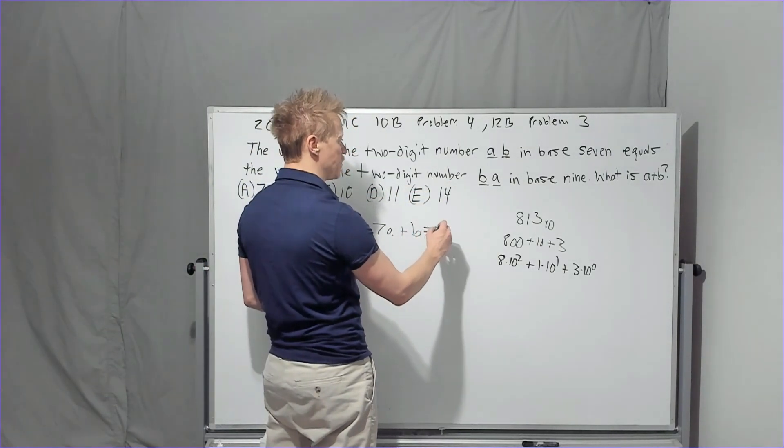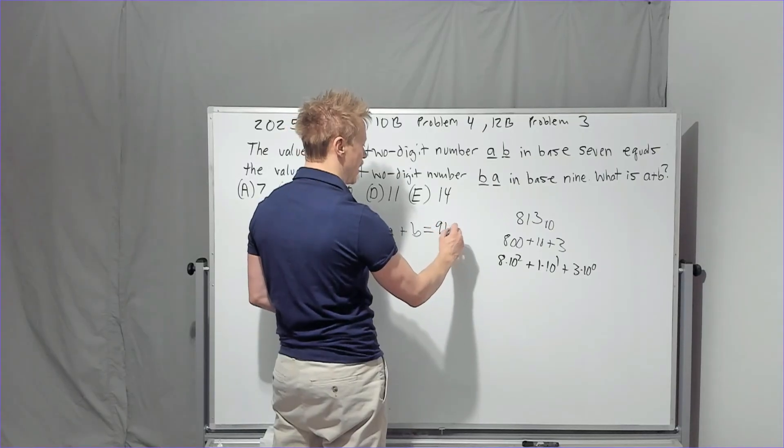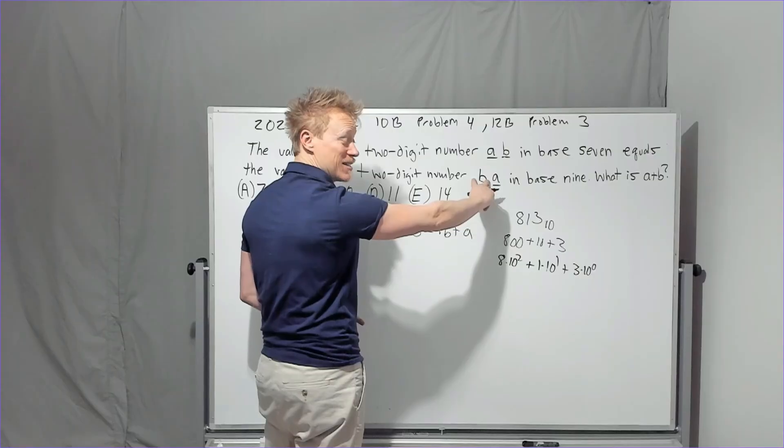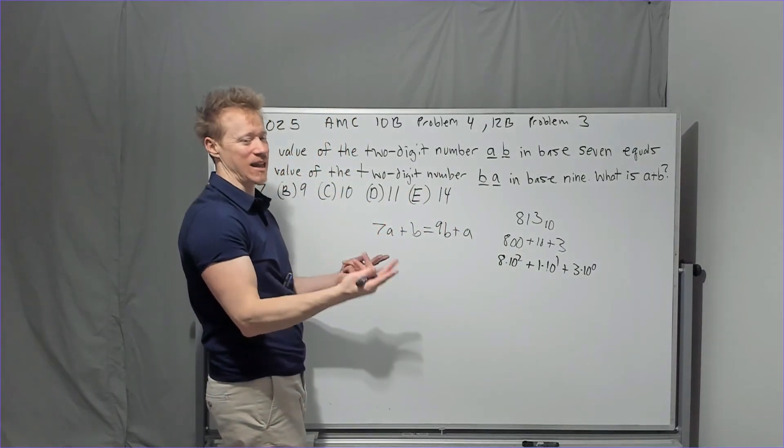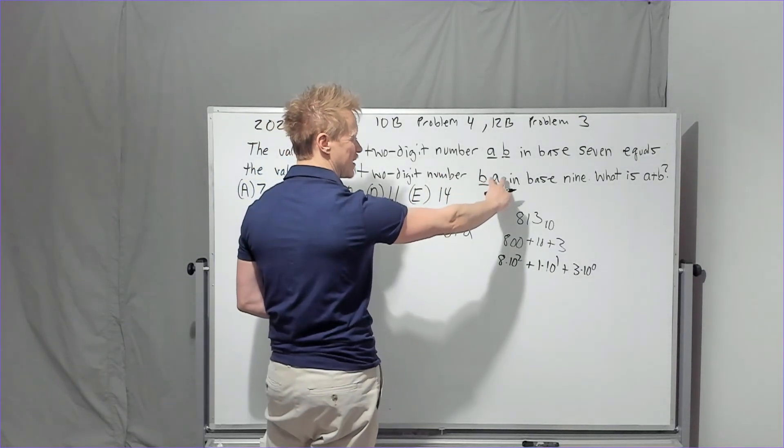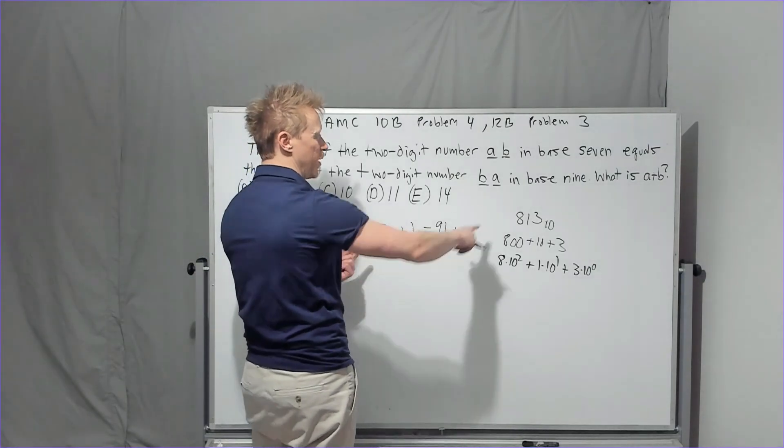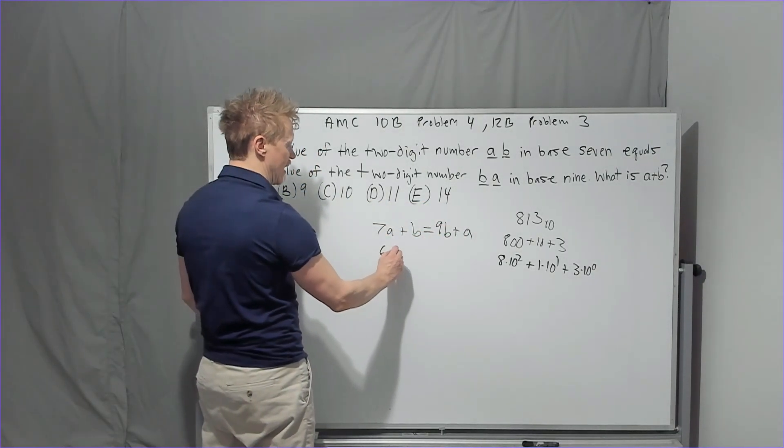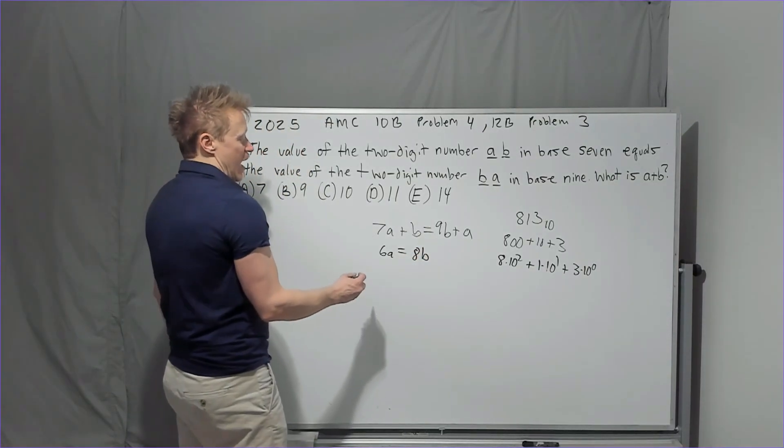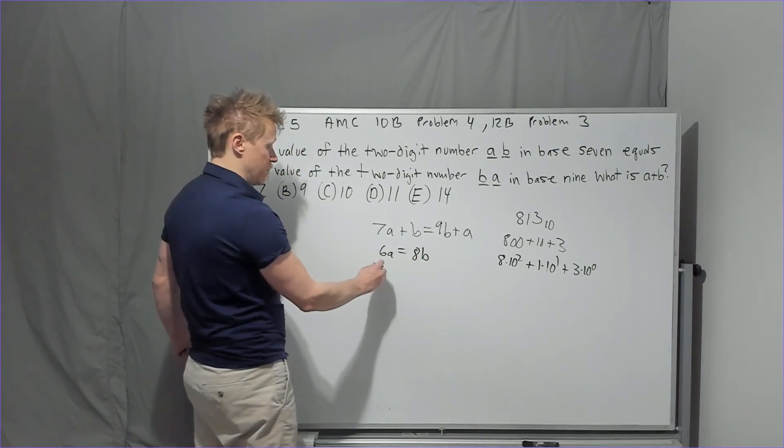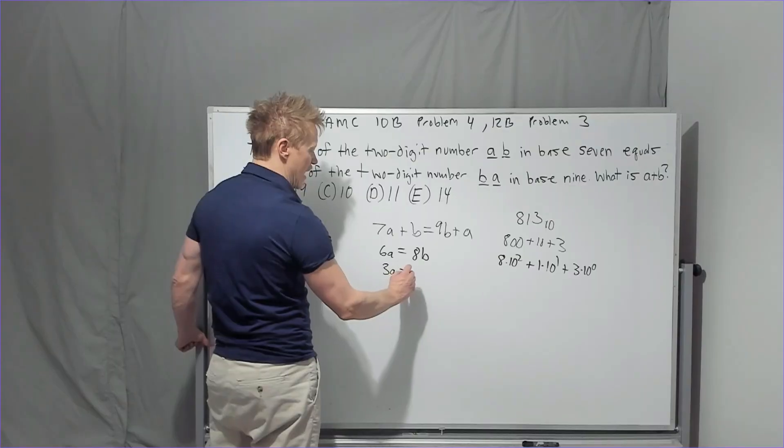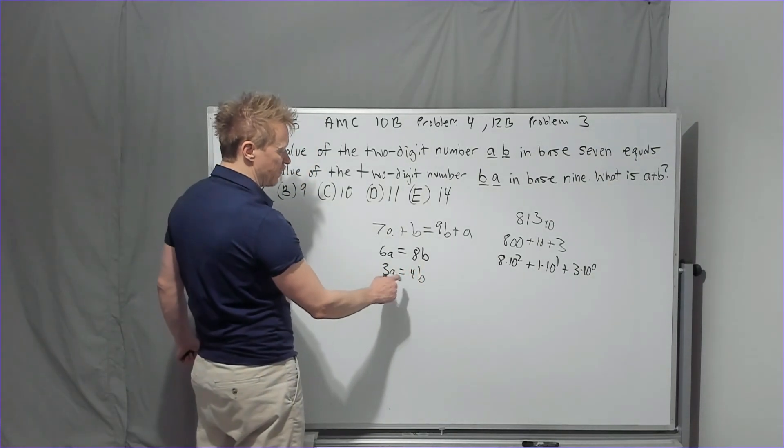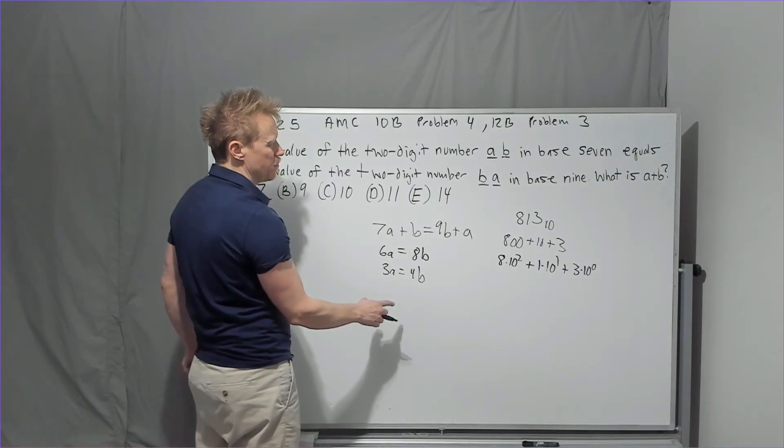So 7a plus b is going to equal the value of the two digit number ba in base nine. What is a plus b? So this is going to be 9b plus a. Again, converting to base nine, this is the tens place, but it's not tens, it's nines. So it's the nines place and then the ones place. So all you're going to do at this point is probably subtract a to get 6a equals 8b. I'm going to go ahead and divide by two on both sides. So I'm going to get 3a equals 4b. The easiest thing to do would be to let a be 4 and b be 3.